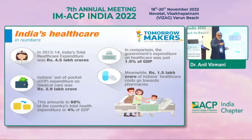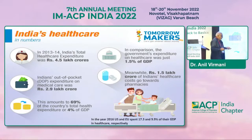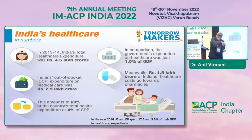They realized this after COVID, and now the Honorable Prime Minister has increased the GDP allocation. Meanwhile, $1.5 lakh crores of Indian healthcare costs goes towards pharmacy. If you look at the US and Europe, 17.3% and 9.9% of GDP was spent on healthcare as far back as 2014.